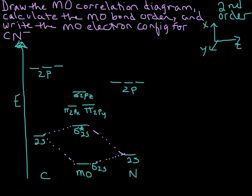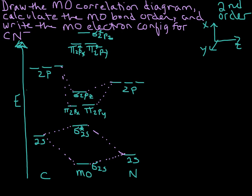Let's fill in the rest. These don't change depending on the order of the diagram, so we're going to have the anti-bonding pi star 2px and pi star 2py, and then finally sigma star 2pz. Now we're ready to also make the correlation lines. The nitrogen atomic orbitals are going to contribute more to the energy of the bonding MO's than the anti-bonding, and carbon is going to contribute more to the anti-bonding. So there's our MO correlation diagram.